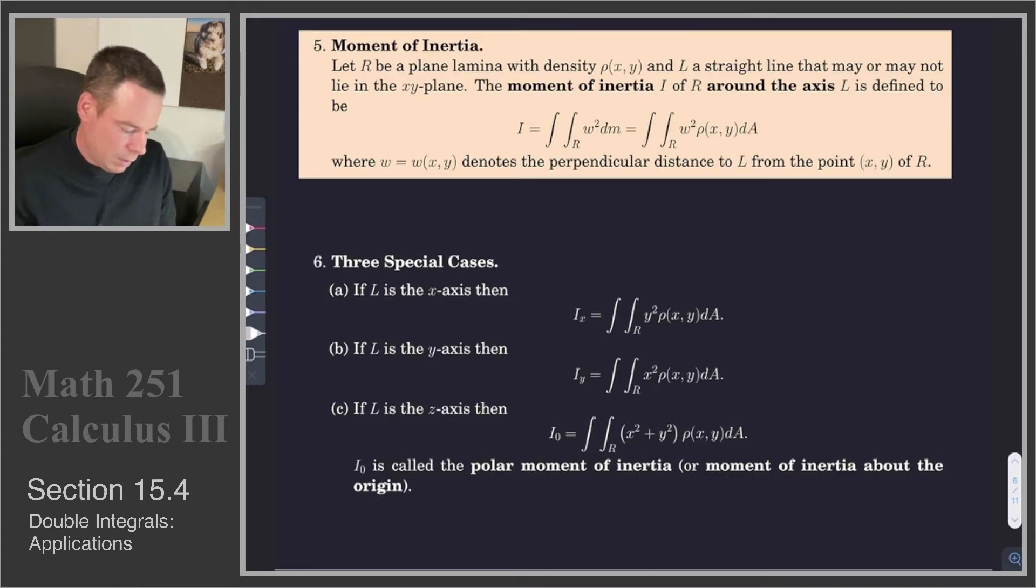If R is a plane lamina with density ρ(x,y) and L is a straight line, so that's going to be our rotation axis, that may or may not be in the XY plane, the moment of inertia I of R around that axis L is defined to be the double integral of...